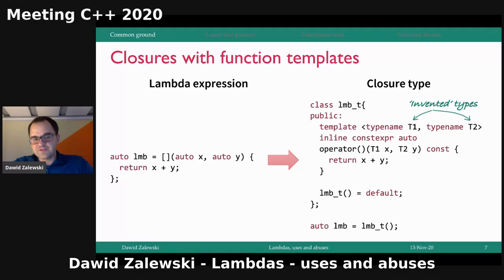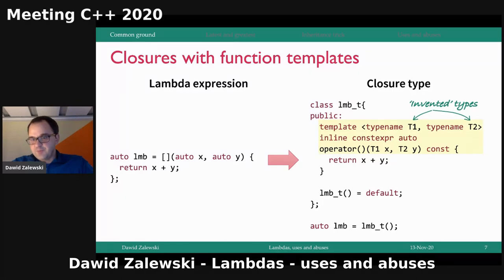Things get more interesting with generic Lambdas. If you write a Lambda using auto types, the compiler generates a function call operator template — not just a function call operator, but a template. For every single auto type you define in your Lambda expression, there is a unique invented template type in this function call operator template. So every auto corresponds to a unique invented type, which can lead to problems sometimes. The rest stays the same: it's still constexpr, still inline.